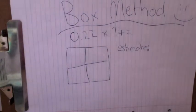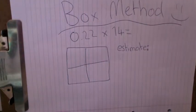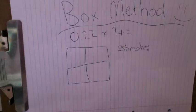This is a video on how to do a box method with this equation. First of all, we need to round 0.22 and 74.